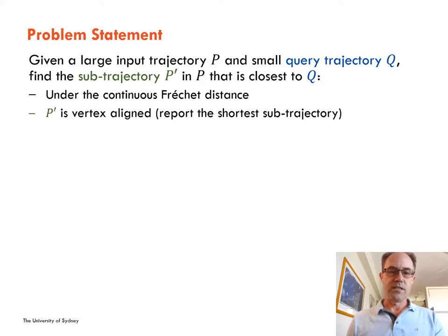We use the continuous Fréchet distance to measure the trajectory proximity, and the sub-trajectory result is vertex aligned, meaning it must start and end on contiguous vertices of P.